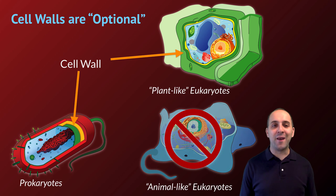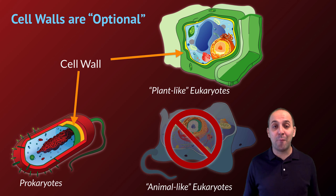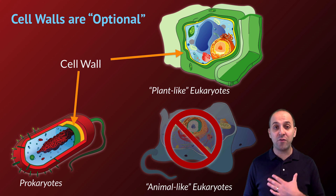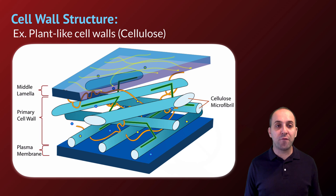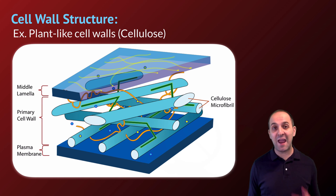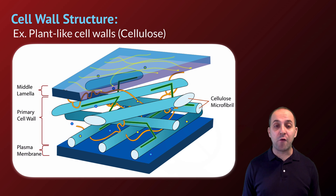Unlike cell membranes, cell walls are an optional structure — meaning there are groups of cells that do not have cell walls, unlike cell membranes which every cell has. Specifically, plant-like eukaryotes, fungal cells, and prokaryotes all have cell walls, while animal-like cells like our cells do not. Unlike the cell membrane, which plays a major role in transport function, the function of cell walls is limited strictly to maintaining the structure of the cell. This is why plants and bacteria have them — they don't have other structural supports — whereas animals have skeletal systems to maintain their internal structures, so cell walls are not required for animals.